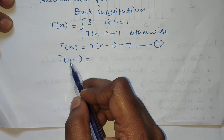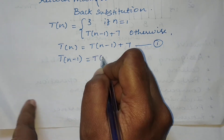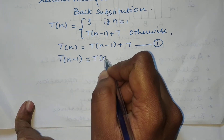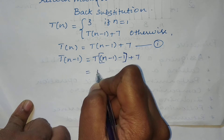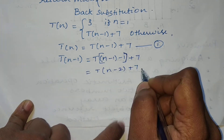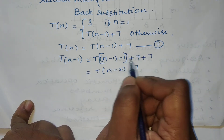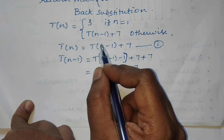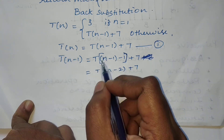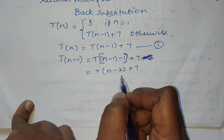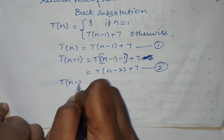To find T(n-1), we substitute n-1 in the place of n. So in the place of n, if we substitute n-1, we get T(n-2) + 7. This will be considered the second equation.